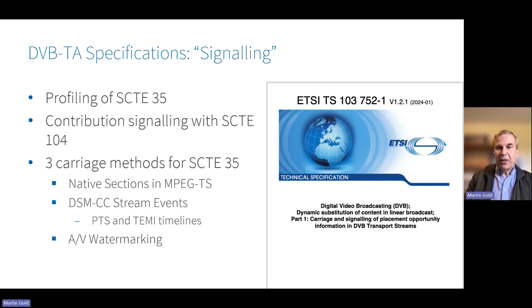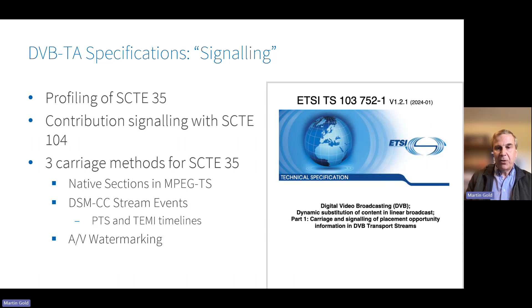DVB has developed three specifications for targeted advertising. The first covers how to provide signalling to identify and precisely locate to the frame an individual ad spot or a whole break. There is an established specification in the industry called SCTE 35; however, this is a complex specification with many options. DVB has profiled the use of SCTE 35 for DVB's targeted advertising. The specification also profiles the companion SCTE specification 104, which covers the control messages to an encoder that will generate the SCTE 35 messages.